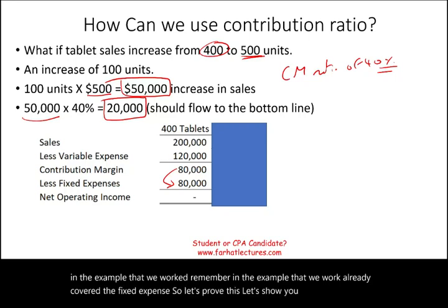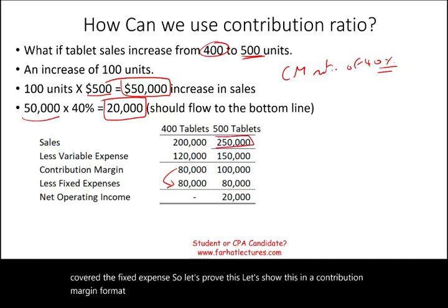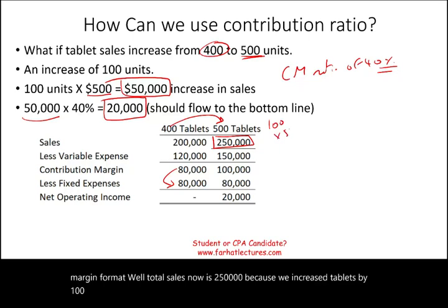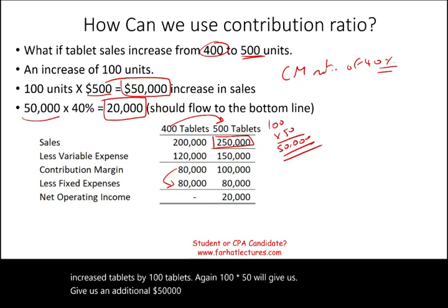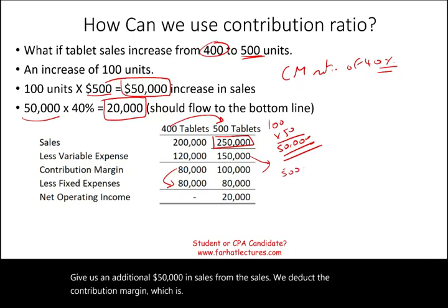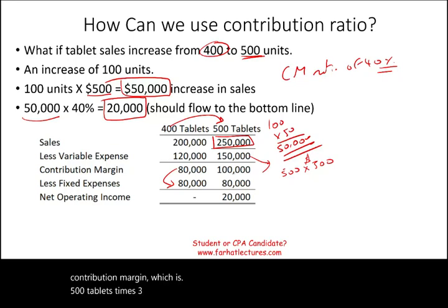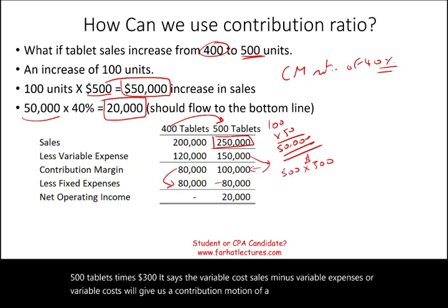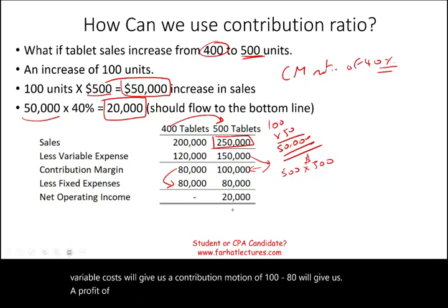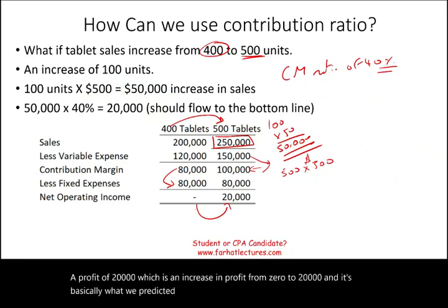Let's prove this in a contribution margin format. Total sales is now $250,000 because we increased tablets by 100 units — 100 times $500 gives us an additional $50,000 in sales. From the sales we deduct the variable cost, which is 500 tablets times $300. Sales minus variable costs gives us a contribution margin of $100,000. Then $100,000 minus $80,000 fixed cost gives us a profit of $20,000 — an increase in profit from zero to $20,000, which is exactly what we predicted.